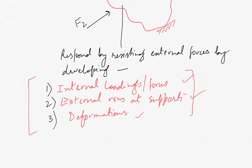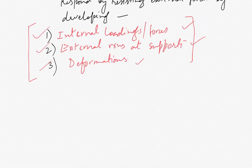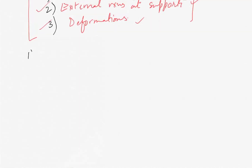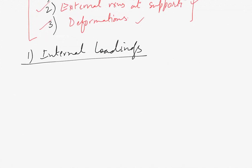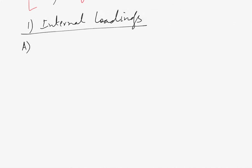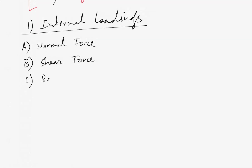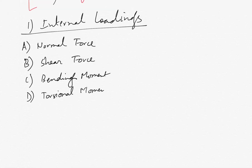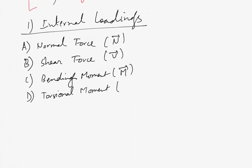There are various methods and techniques to find out these three parameters. First is internal loadings, which are of mainly four types: first, normal force; second, shear force; third, bending moment; and fourth, torsional moment. They are denoted by N for normal force, V for shear force, M for bending moment, and T for torsional moment.